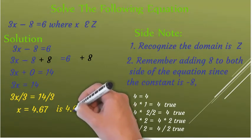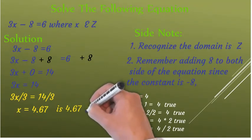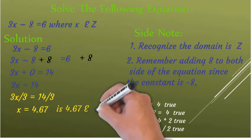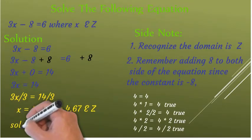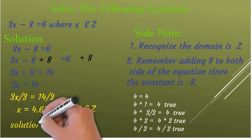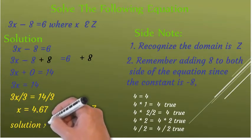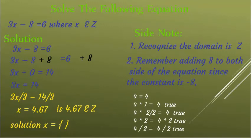The next question is: is 4.67 — that is, 14 divided by 3 — an element of Z? The integer is a real number, but 14 over 3 is not an integer. Therefore, our solution x is an empty set.